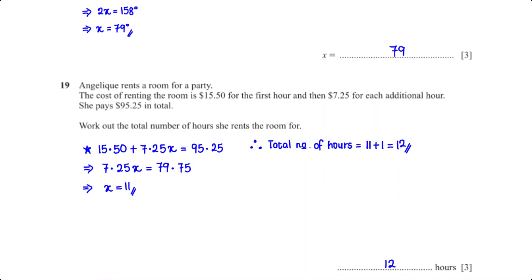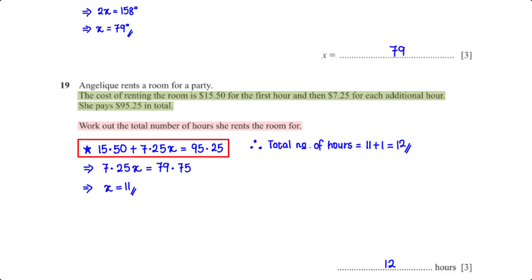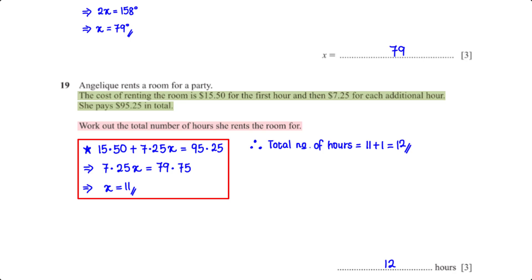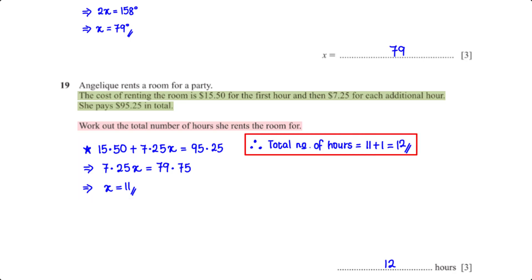Angelica rents a room for a party. The cost is 15.50 dollars for the first hour and 7.25 dollars for each additional hour. She pays 95.25 dollars in total. Setting up the equation: 15.50 plus 7.25x equals 95.25. Grouping like terms and making x the subject gives 11. So in addition to the first hour she rents for an additional 11 hours, making the total 12 hours.